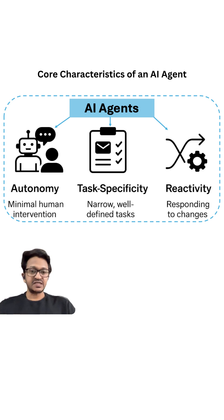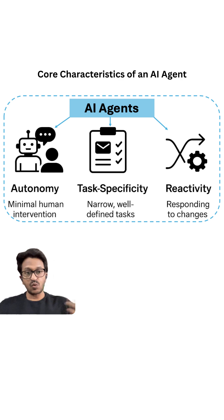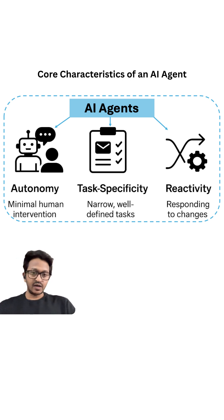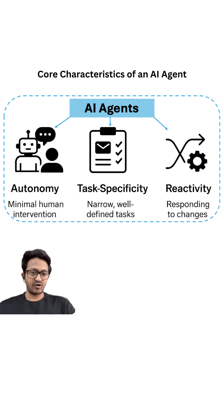Then comes task specificity — narrow, well-defined tasks. It doesn't do ambiguous tasks. It understands what to do because it perceives well and reasons well, so it performs narrow, well-defined tasks. When a user query comes in, it basically decomposes that query into subtasks. That is why we talk about task specificity as one of the core characteristics of an AI agent.